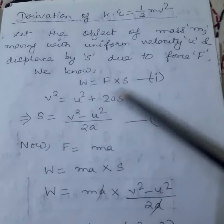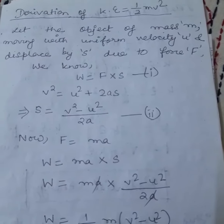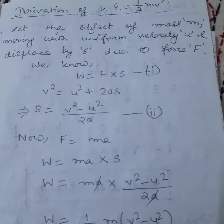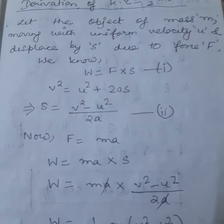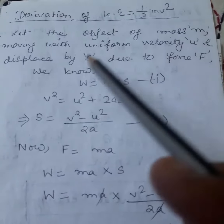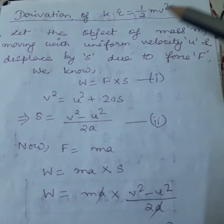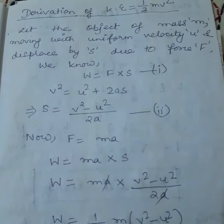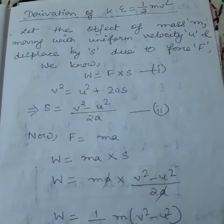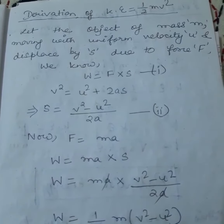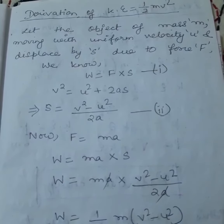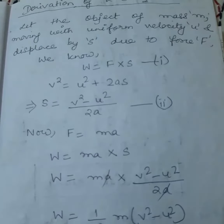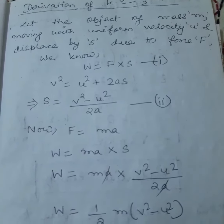Now let us consider — and what I am teaching you, you have to write the whole content in your physics copy. We consider an object of mass m moving with uniform velocity u and displaced by s due to force f. So we first consider an object whose mass is m, it is moving with a certain velocity, and due to force f being applied, it is displaced — it moves a certain distance s.